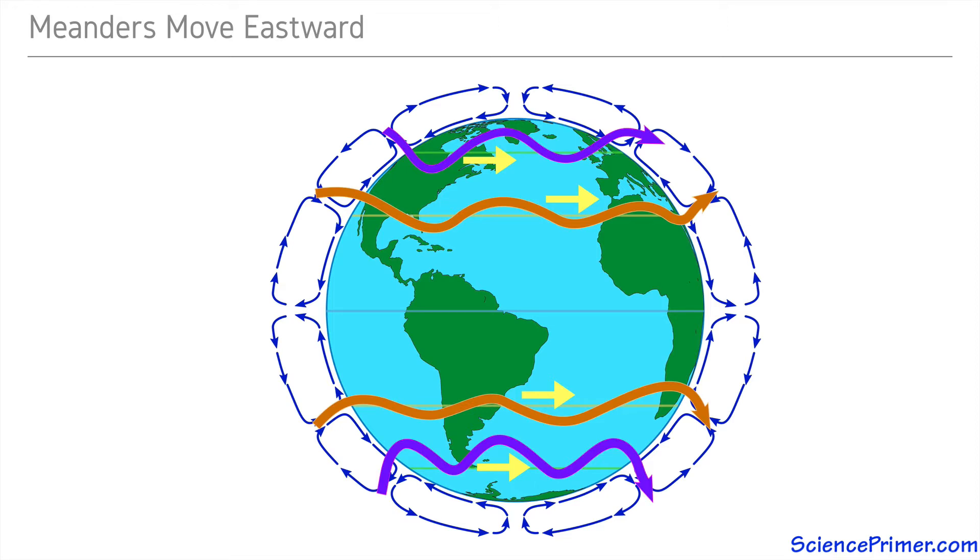Weather conditions are influenced by the position of the polar jet stream, with weather typically being warmer and wetter on the Ferrel side of the polar jet and cooler and drier on the polar side. As the peaks and troughs in the jet stream move eastward, so do the weather conditions on either side of the interface.